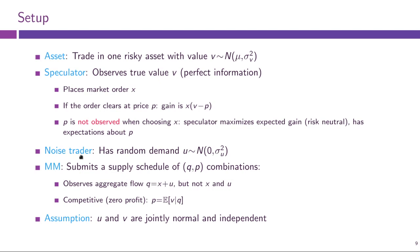The noise trader in this model has random demand given by u, which is also normal with mean zero and some variance sigma-squared-u. We are not saying this random demand is completely arbitrary — rather, the reasons for which noise traders are trading are orthogonal to the fundamental value of the asset, so noise traders' orders do not convey any information about the fundamental value v.